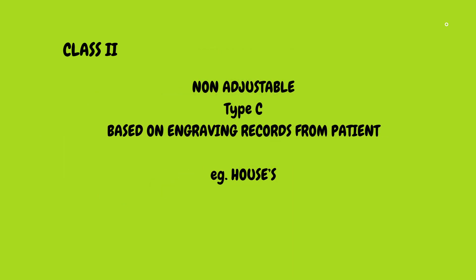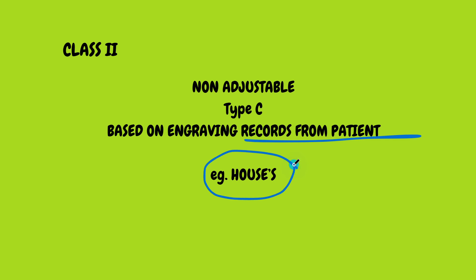Class 2 type C is based on records from the patients, like the Needlehouse method for recording jaw relation. If you want to know more about that, please refer to our video on jaw relations. If it is based on that method, then it is Houses' articulator.